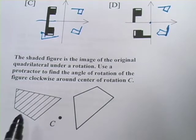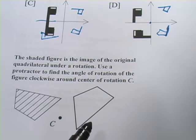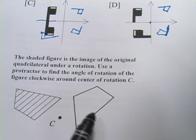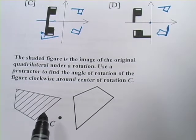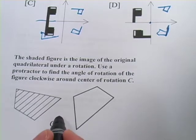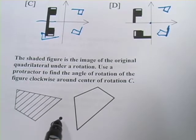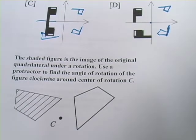This one says the shaded figure, so this guy right here, is the image of the original quadrilateral under a rotation. So they took this thing and they rotated it. Use a protractor to find the angle of rotation of the figure clockwise around the center of rotation C. So they took this thing and they spun it around and somehow it ended up like this. They spun it around this point. And the idea is how many degrees of an angle did it rotate?